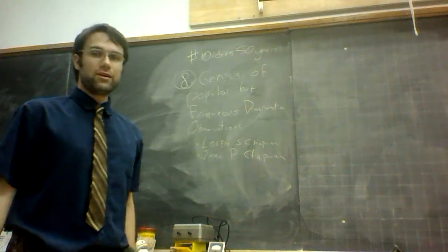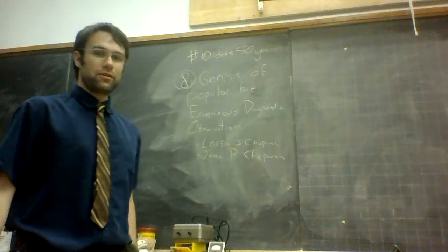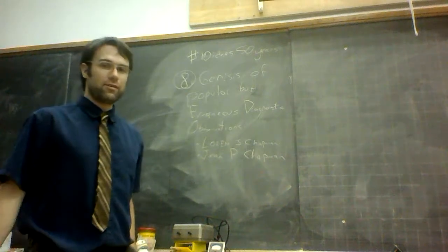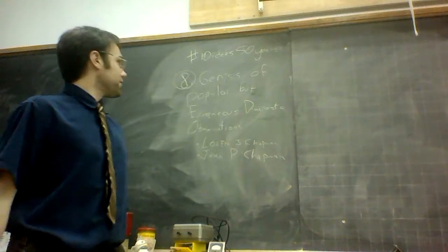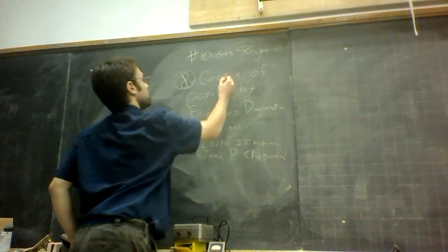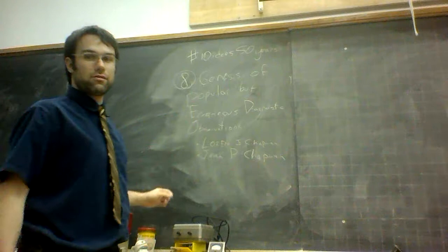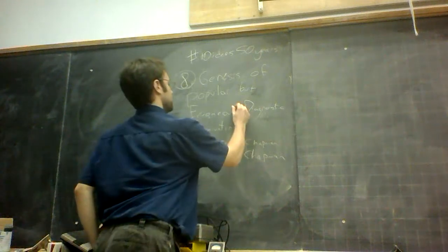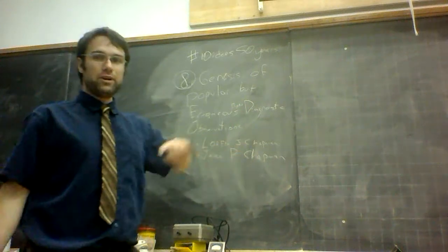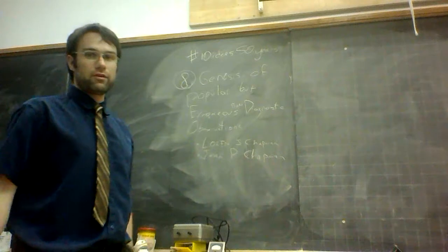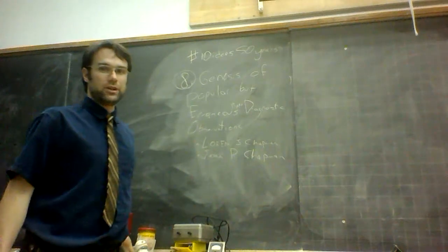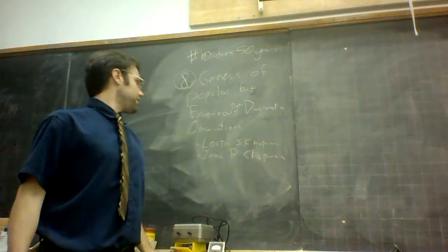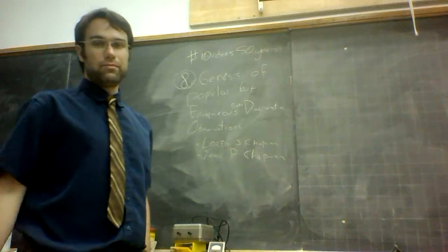This is going to be a little bit different than the previous videos, in that it's actually an empirical study. Unfortunately, I don't have a lab full of people to try this with, but I encourage you to try to reproduce this and see if the numbers actually stick. This is the genesis of popular but erroneous psychodiagnostic observations, by Lauren J. Chapman and Jean T. Chapman at the University of Wisconsin, back in 1967. This was published in the Journal of Abnormal Psychology, volume 72.